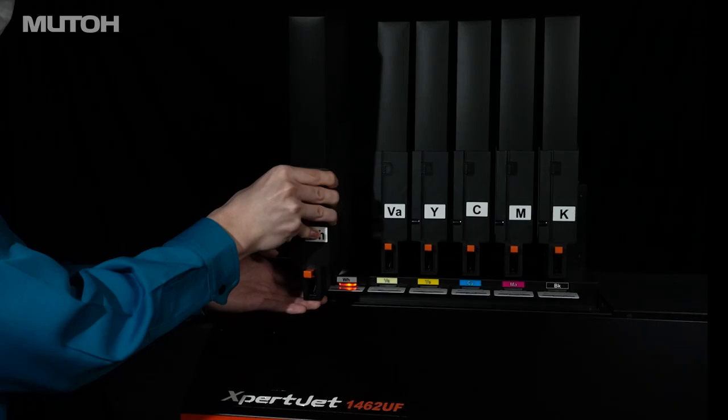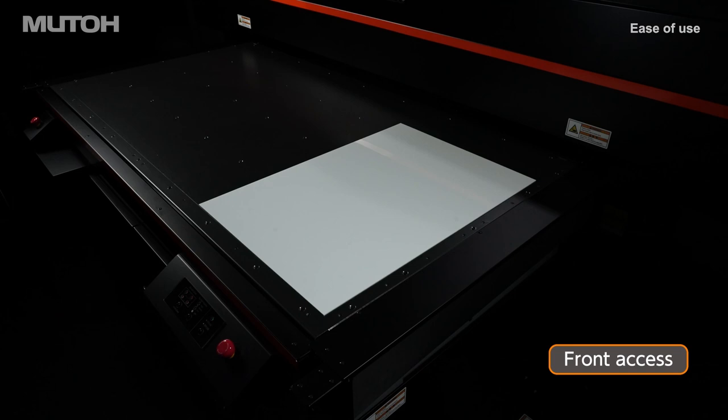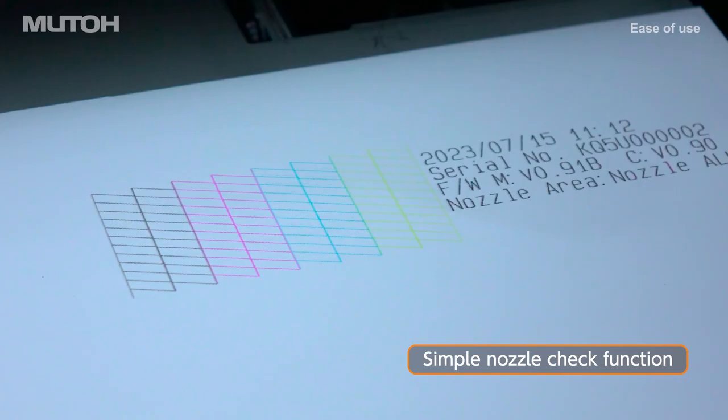Operators can access the ink delivery system from the front of the printer. The simple nozzle check function allows nozzle checks to be performed at any time in a dedicated area next to the table, even with media and dedicated jigs on the print table.